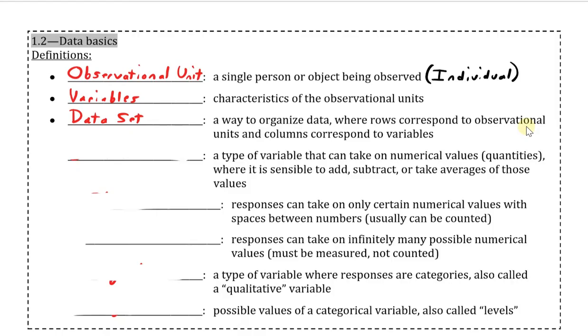The variables themselves though, like hair color and gas mileage that I just mentioned, are further divided into variable designations, the first of which being a quantitative variable. A quantitative variable is one that can take on a numerical value, quantities, where it is sensible to add, subtract, or take averages of those values. Generally, if a value can be described by a number, then it is often times quantitative. But the last part of the sentence will help us to identify variables that look numeric, but aren't actually quantitative.